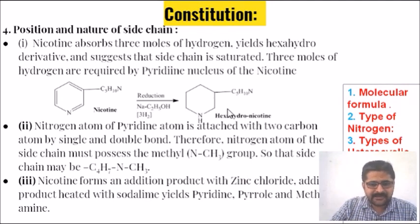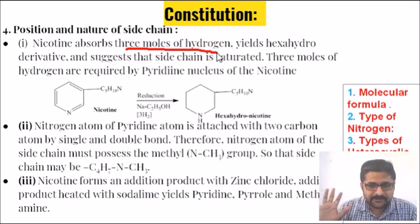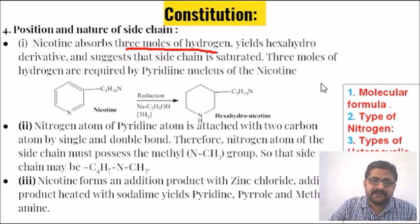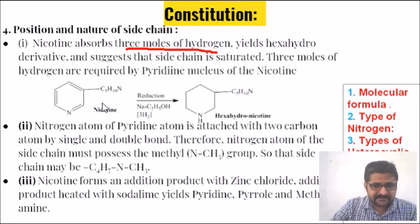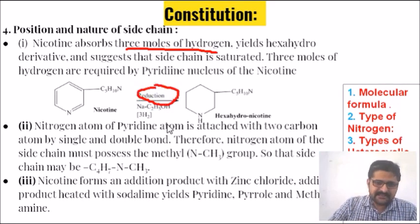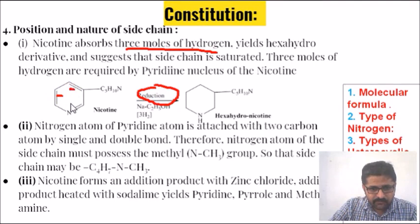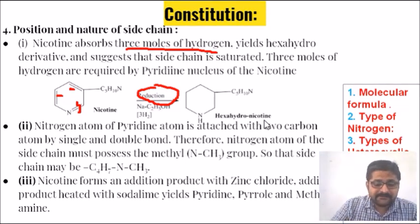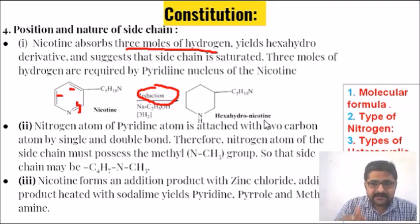Next: the position and nature of the side chain. Nicotine absorbs 3 moles of hydrogen and yields a hexahydro derivative, suggesting the side chain is saturated. Three moles of hydrogen are required by the pyridine molecule in nicotine. On reduction using sodium and ethanol, bonds 1, 2, and 3 are reduced and we get hexahydronicotine. Therefore, the side chain is saturated.